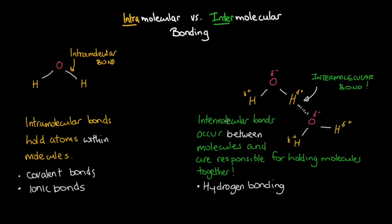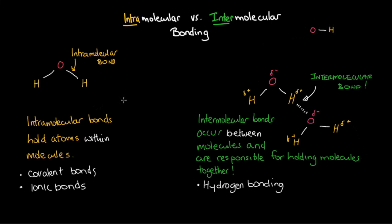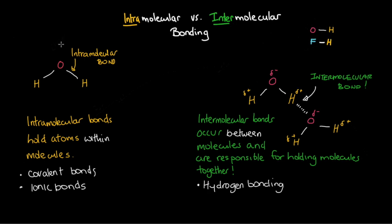There are only three scenarios in which hydrogen bonding can occur. The first is when a molecule contains oxygen attached by a covalent bond to hydrogen — that molecule can exhibit hydrogen bonding. The second is when fluorine is attached to hydrogen within a molecule. The third involves nitrogen: when a molecule contains nitrogen bonded to hydrogen, that molecule will also exhibit hydrogen bonding.